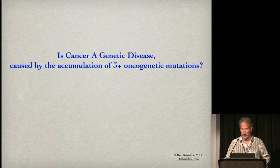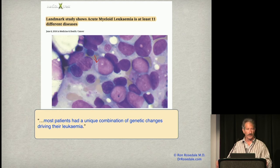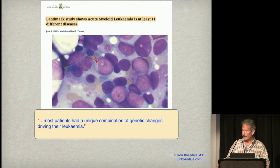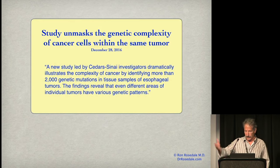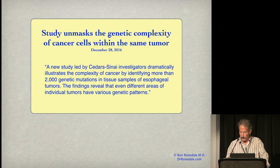Is cancer a genetic disease caused by the accumulation of oncogenic mutations? Patients with leukemia could be divided into 11 classes, each with unique genetic profiles — meaning almost every case of cancer has a unique genetic array of mutations; there aren't specific mutations for each cancer. A study at Cedars-Sinai identified more than 2,000 genetic mutations in tissue samples of esophageal tumors, and even different areas of individual tumors have various genetic patterns — and in non-cancerous esophagus they find almost the same thing.